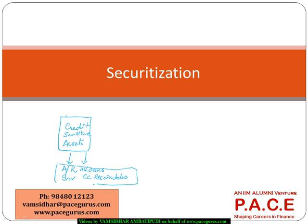They are called credit sensitive assets for the simple reason that there is some level of uncertainty in terms of their collection, and there may be some kind of default that can happen on those assets. There may also be a reduction in the value of those assets in reality.